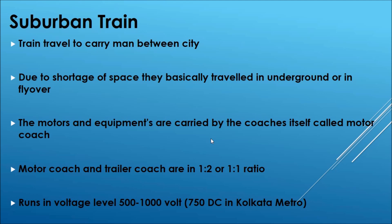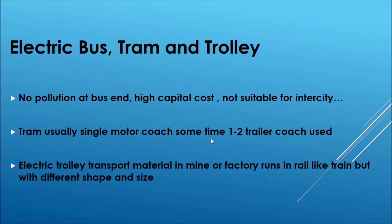Since the metro is underground, high voltage is not possible because high voltage requires more clearance. That is why this type of train operates in the 500 to 1000 volt range — for example, the Kolkata Metro runs at 750V DC. Trams use a single motor coach with sometimes one or two trailer coaches. Electric trolleys are used in coal or underground mining and always run over a rail.